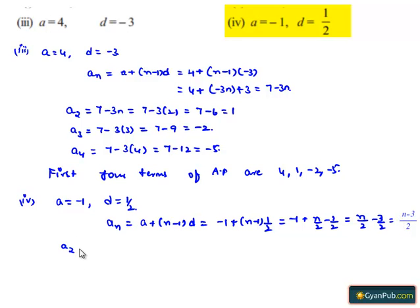Therefore, the second term a₂ can be obtained by substituting 2 for n: (2-3)/2 which equals -1/2. And a₃ is found by substituting 3 for n.